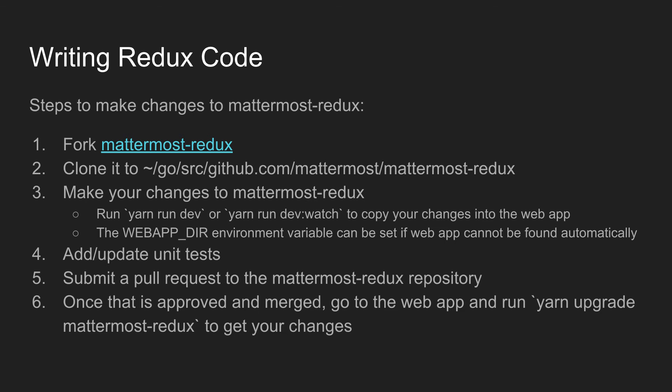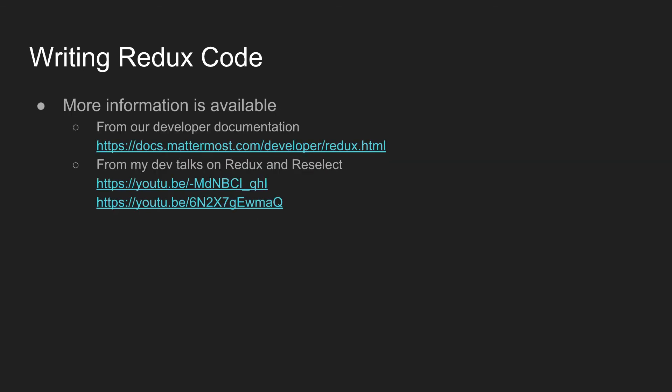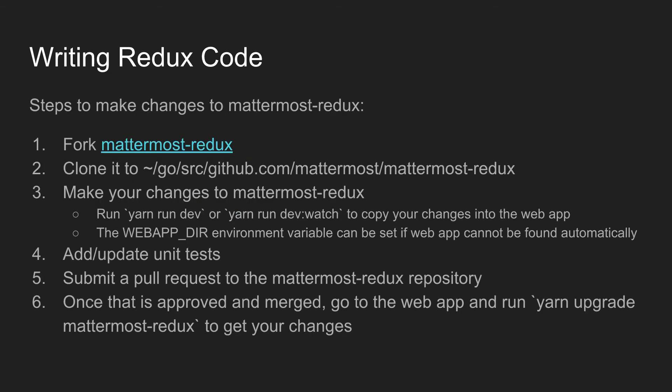There's also an environment variable you can set if it can't find the web app properly. Once you've made your changes, you'll want to add and update unit tests. It's a lot easier to write unit tests for the Redux store than for components in the web app. We definitely appreciate any unit tests, and for complicated changes we usually require them for pull requests. Once that's approved and merged, you can run yarn upgrade Mattermost Redux to get your changes and then submit your web app PR.